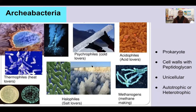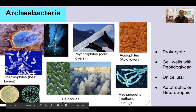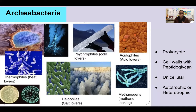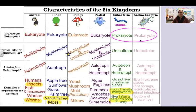Our last kingdom is Kingdom Archaeobacteria — also prokaryotic, with cell walls containing peptidoglycan. They are unicellular and can be autotrophic or heterotrophic. This is an interesting group because these organisms live in extreme environments: thermophiles are extreme heat lovers, acidophiles are extreme acid lovers, and halophiles — think of salt brines — are the salt lovers. These organisms can live in extremely harsh conditions. In our review chart, you can see that the only two kingdoms that are prokaryotic are Eubacteria and Archaeobacteria. The remaining four kingdoms are eukaryotes and therefore in domain Eukaryota.